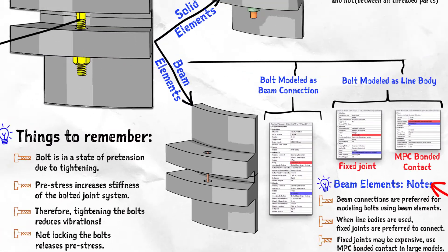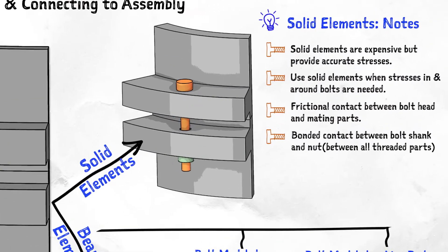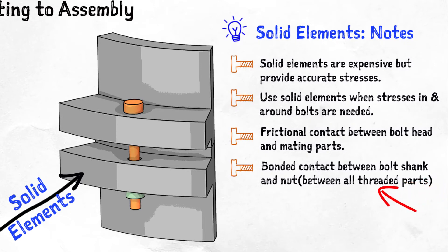Bolts transfer the pre-load to the rest of the assembly via connections that transfer forces between them. In case of solid elements, contacts take this role of connections, where threaded joints are replaced by bonded contacts and interactions between the bolt head and other parts is typically captured using frictional contacts.